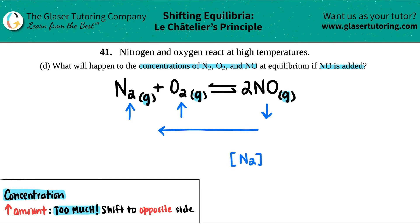Concentration of N2 will increase. Concentration of O2 will also increase, because they're both reactants. And then the concentration of NO would decrease, because that's what set off this whole change. You had to bring it back down.